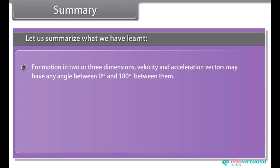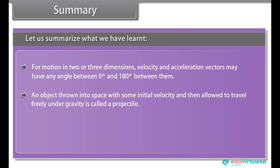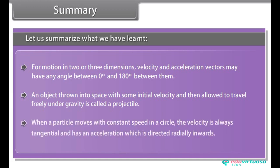For motion in two or three dimensions, velocity and acceleration vectors may have angle between 0 degree and 180 degree between them. An object thrown into space with some initial velocity and then allowed to travel freely under gravity is called a projectile. When a particle moves with constant speed in a circle, the velocity is always tangential and has an acceleration which is directed radially inwards.